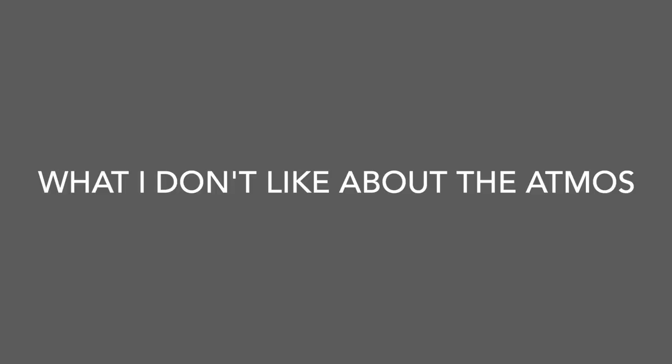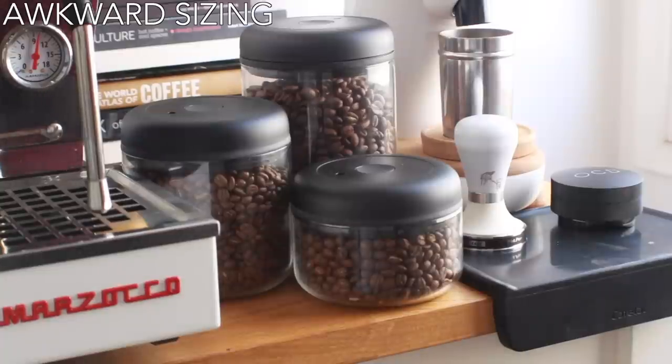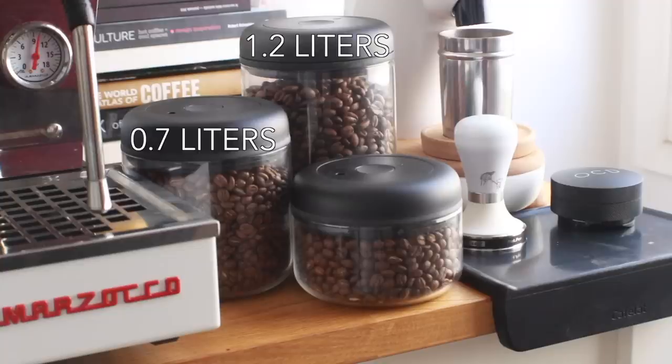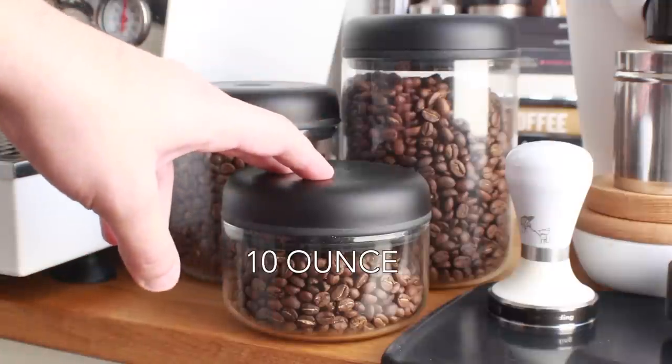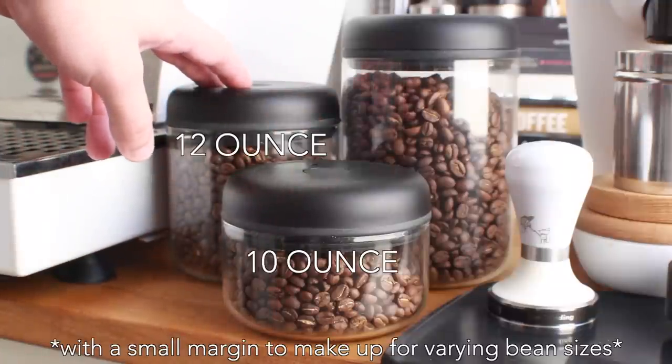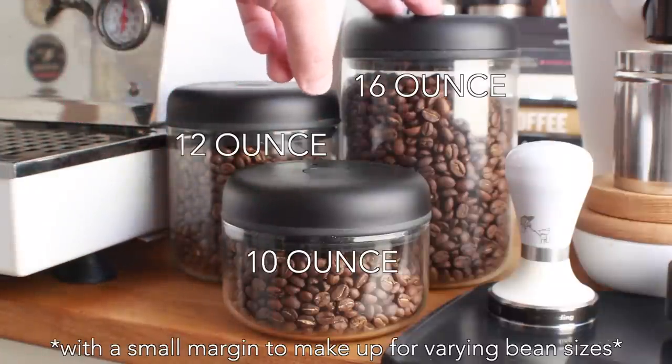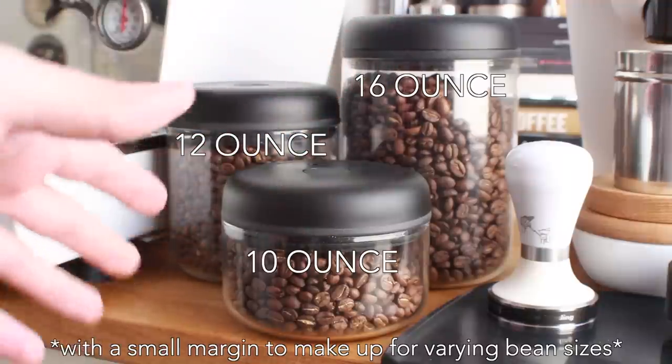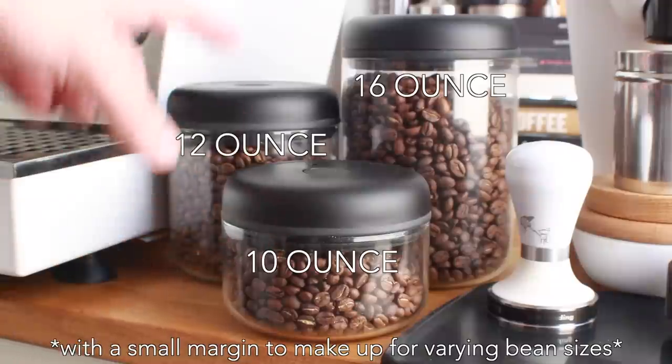Of course we still need to talk about what I don't like about the Atmos. First off, the awkward sizing. I find it odd that they chose 1.2 liters which is 1200 grams, 0.7 liters which is 700 grams, and 0.4 liters which is 400 grams. They're just kind of awkward sizes and they don't really fit a bag of coffee in the real world. I think it would make more sense if they'd done a 10 ounce for the smallest, following up with a 12 ounce for the middle and a 16 ounce for the top, as those are the three most common bag sizes in coffee. I would love to know why they chose those different sizes.